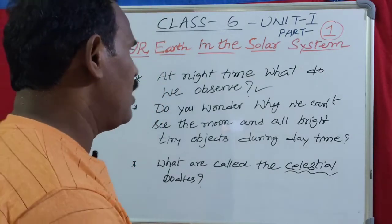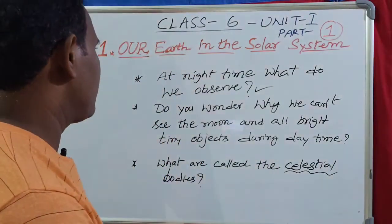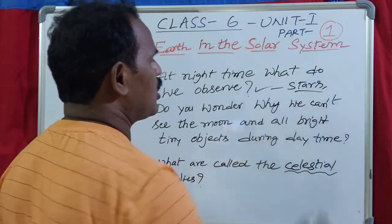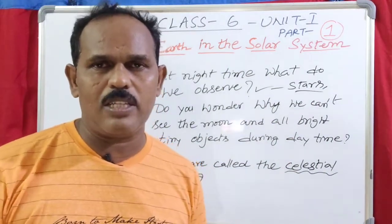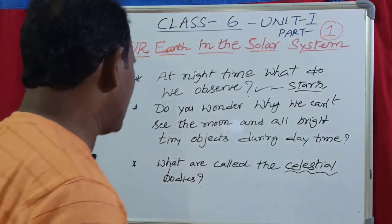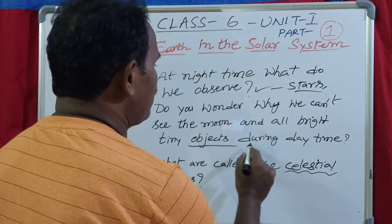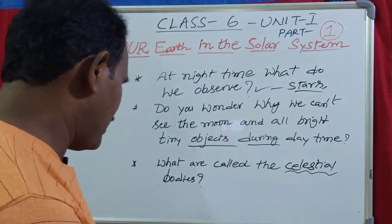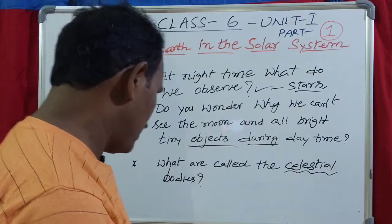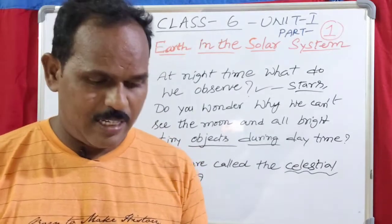Along with these bright objects, we also see the moon on most of the days. Let us know more about the celestial bodies and stars. One star is the Pole Star. Do you wonder why we can't see the moon and all bright tiny objects? It is because the very bright light of the sun does not allow us to see all these bright objects of the night sky.